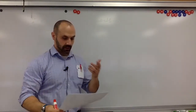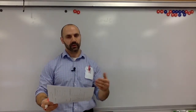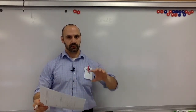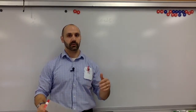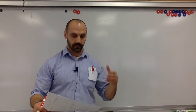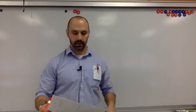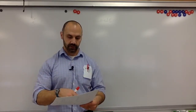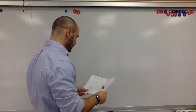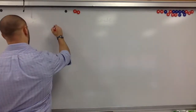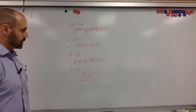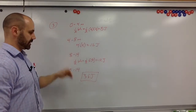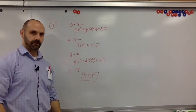Since work is force times displacement, we can look at this as the area under a force-displacement graph — this should all be review. For example 3, I'll just put the answers up: you're finding the area of triangles and rectangles under the graph, adding them up to find total work done. You should be able to do this — it's just area of a triangle, area of a rectangle, and adding them together.